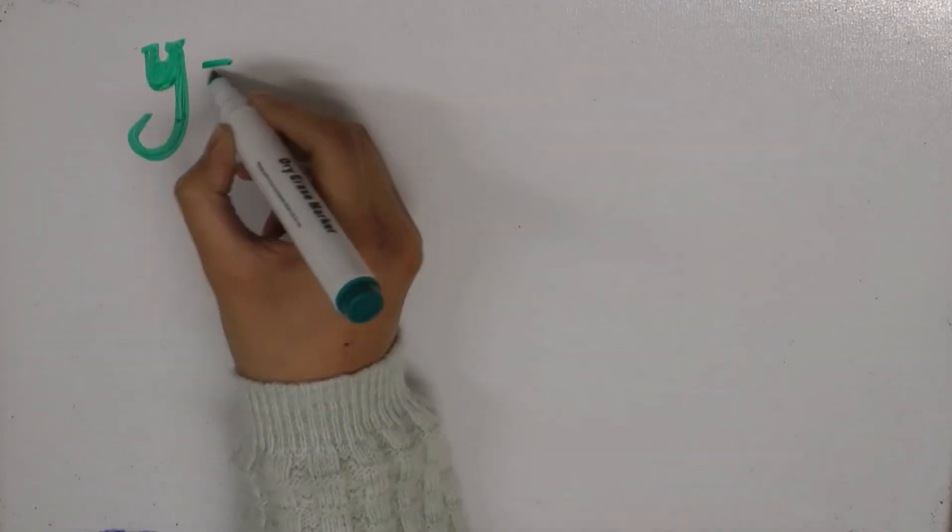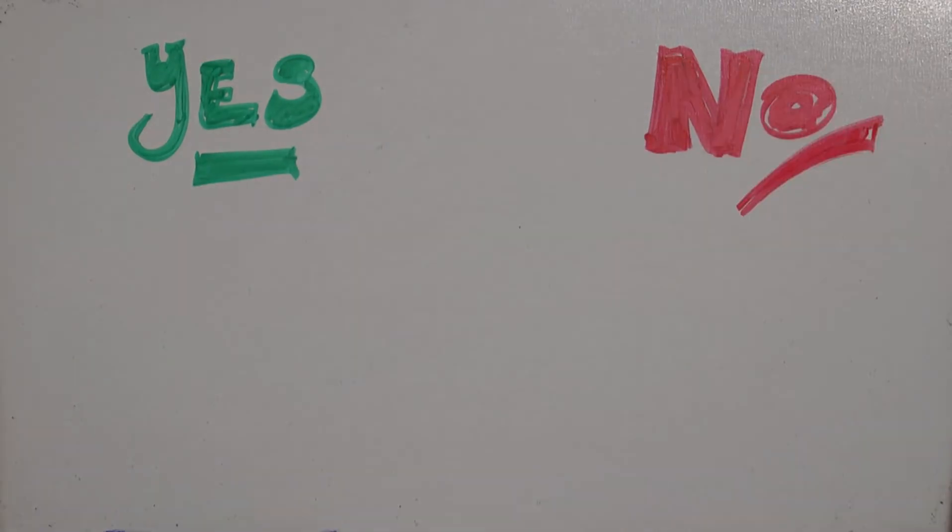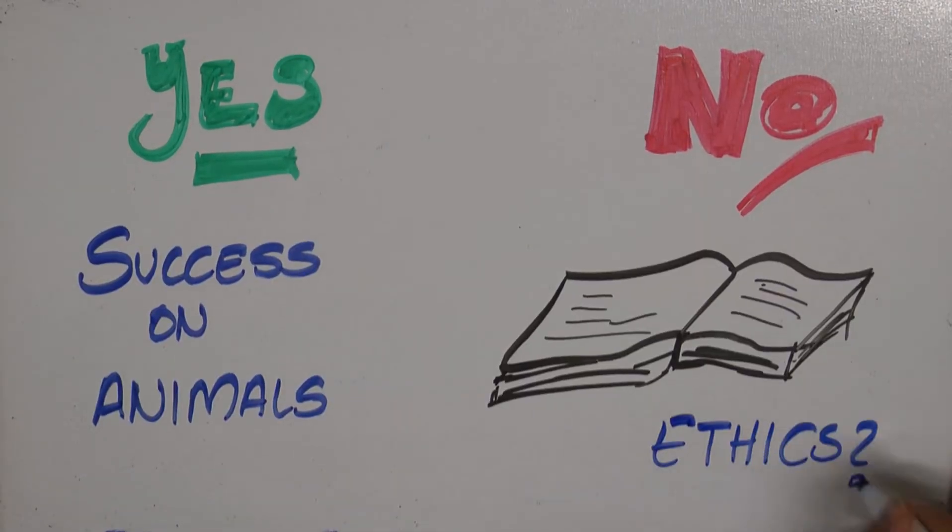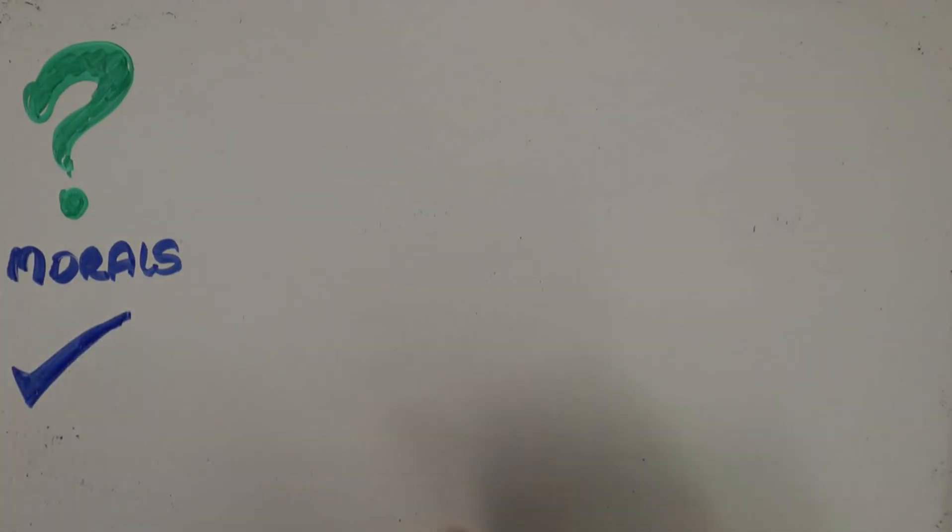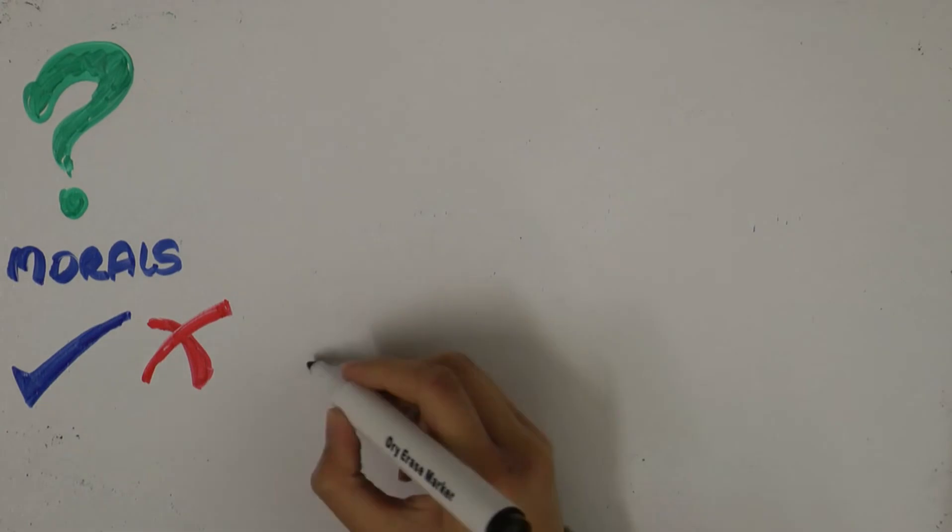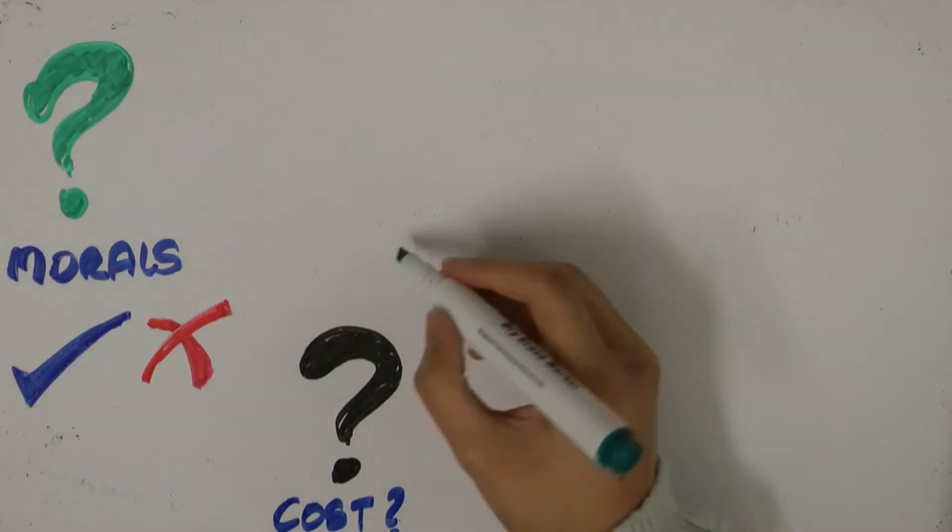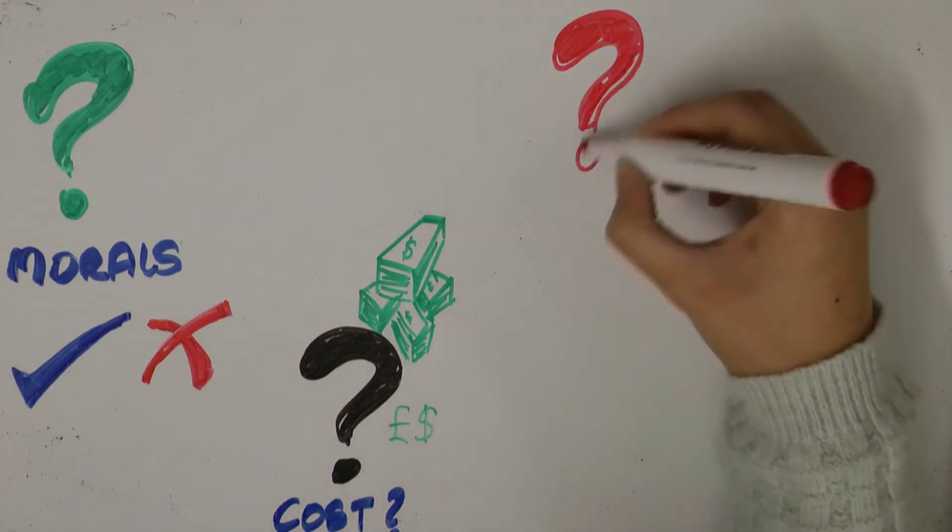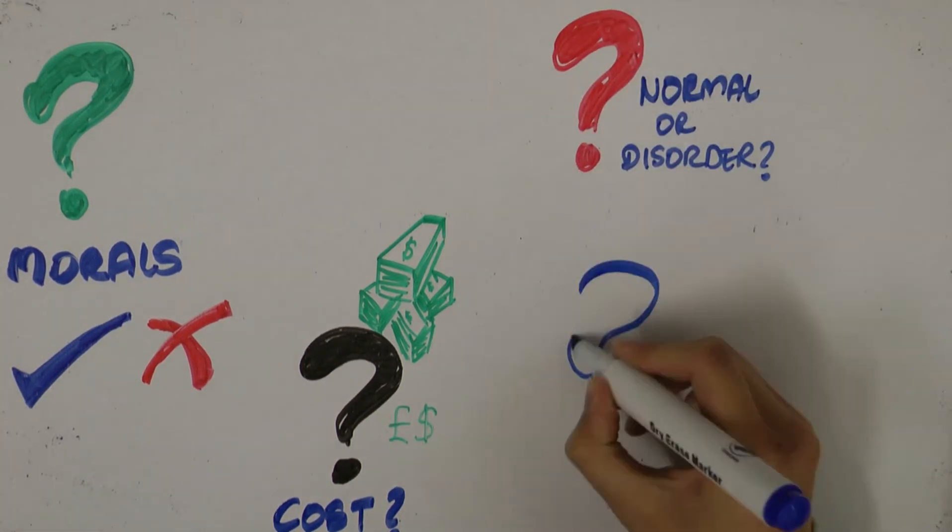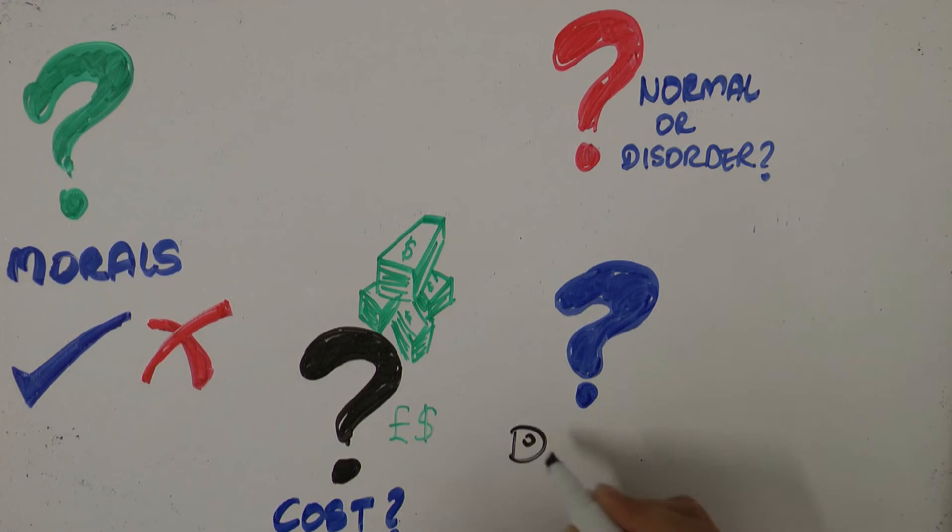Regardless of a promising future, ethical and religious objections are often raised in regards to germline gene therapy. How can we distinguish between morally right and wrong uses of gene therapy? Will the high cost of treatment make gene therapy an option exclusive to the wealthy? Who decides which traits are normal and which constitute a disorder or disability? Could the widespread use make society deficient of diversity?